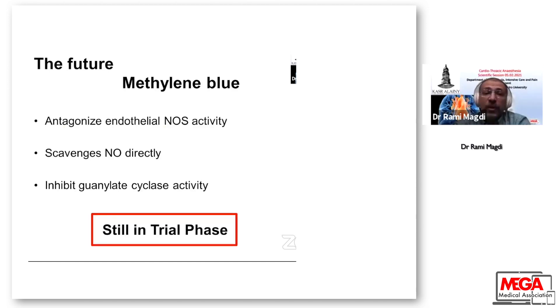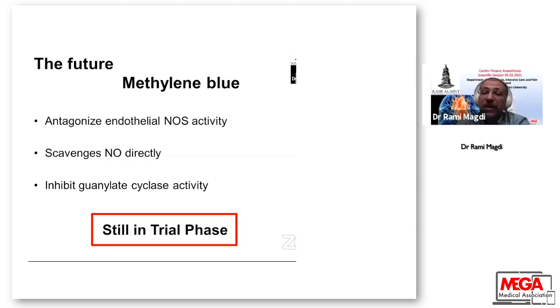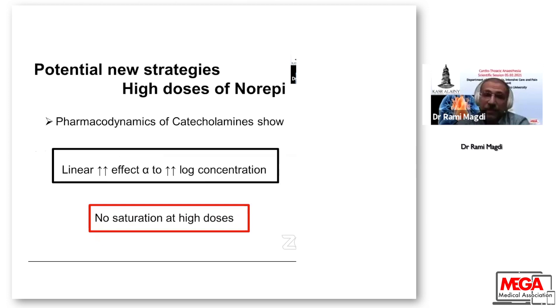Methylene blue can antagonize endothelial nitric oxide stimulatory activity, scavenge nitric oxide directly, and inhibit cyclic GMP. However, methylene blue remains in the trial phase.